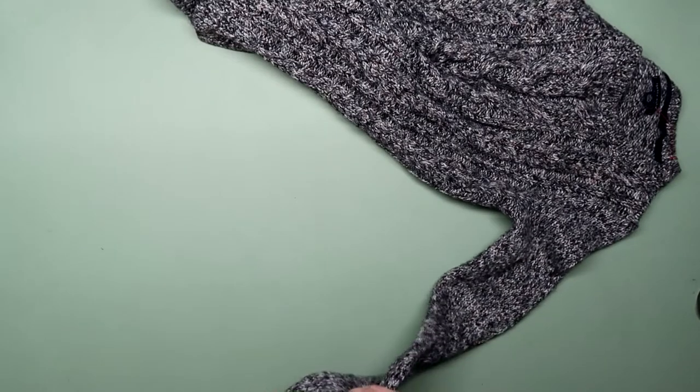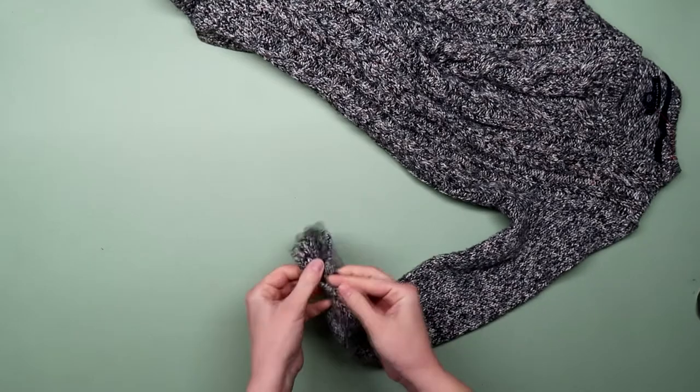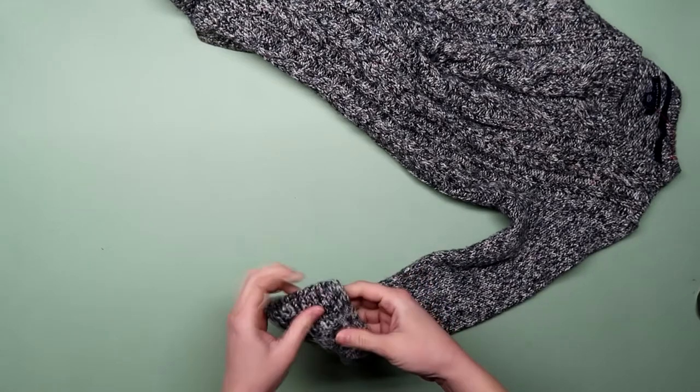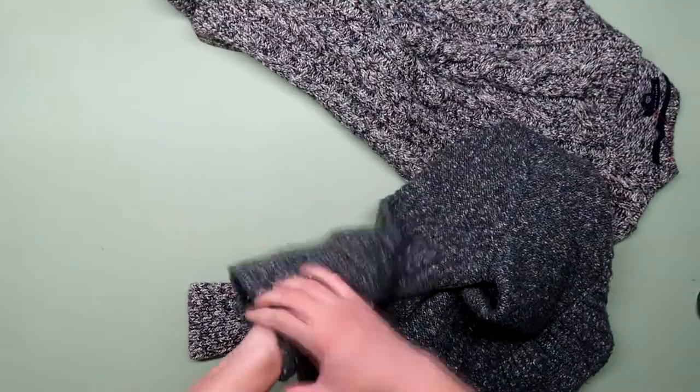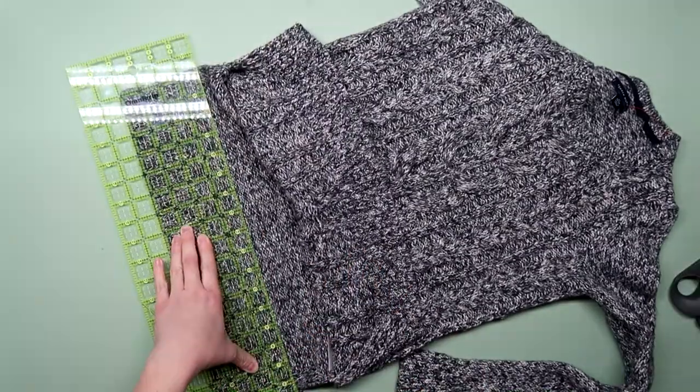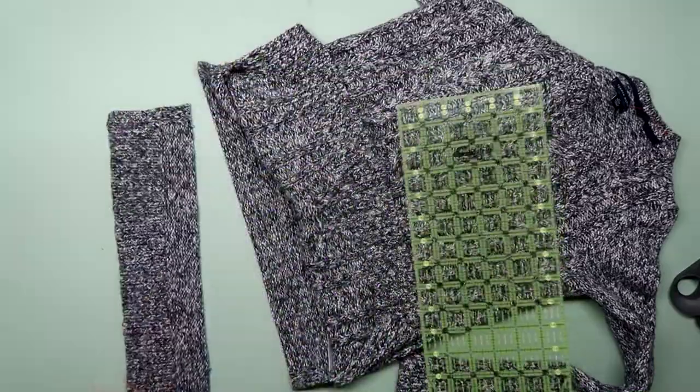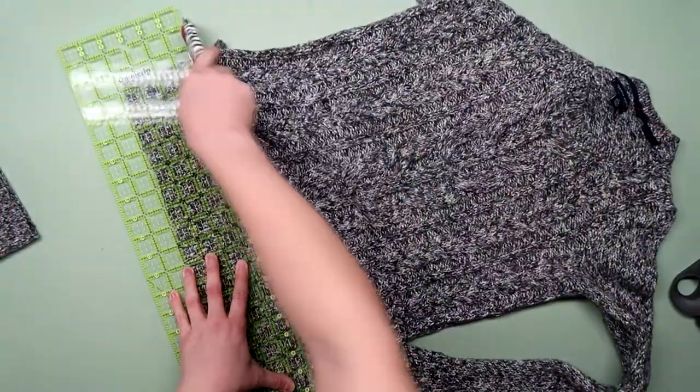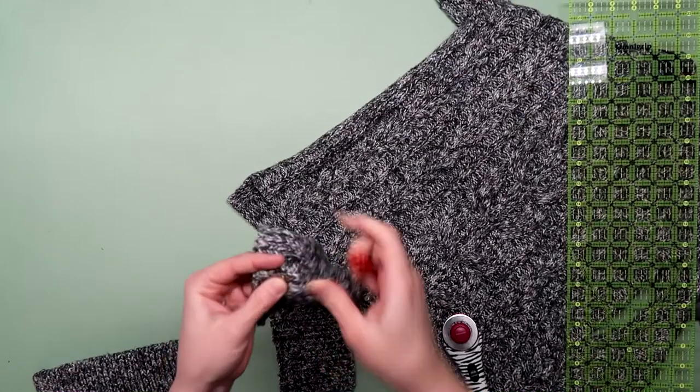I'm going to work on the cuff first. You can use the existing cuff off of one of the sweaters, but this one had a slit and the other sweater was a little too big. So you can use the bottom of the sweater. Cut off four inches from either the cuff or the bottom. I did this first to make sure I had enough fabric. Then I removed this little tag.